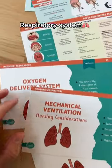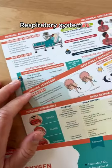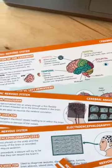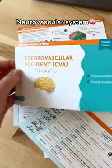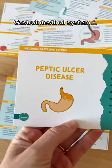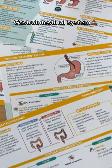Then we have the respiratory system, which is also a pretty big section of the flashcards. Then we have the endocrine system. It covers the nervous system, also called the neuro section. And of course we can't forget the GI system, the gastrointestinal system.